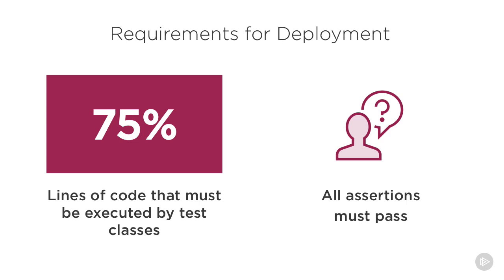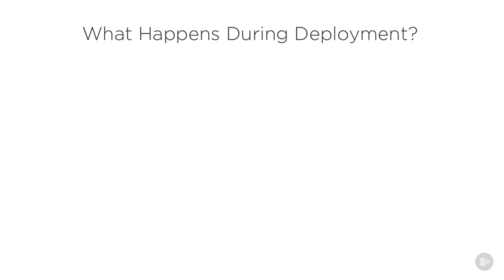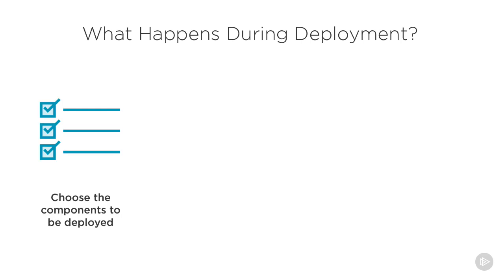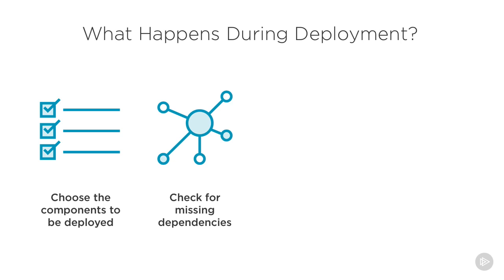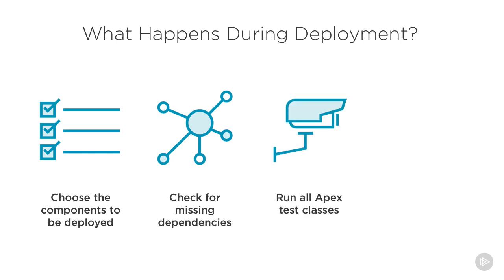The only exception to this rule is if you're deploying components other than code. Non-code components such as workflow rules can always be deployed regardless of your test class coverage. Once you think you've met all the requirements to start a deployment, what actually happens? First you choose the components that need to be deployed. Then Salesforce checks for any missing components — for example, you could be deploying a new custom field on a new custom object but forget to add that custom object to your deployment, and you'll get an error telling you that you're missing a dependency. Then Salesforce will run all test classes in your org — all of them, not just the ones you're deploying. Finally, Salesforce will return your results, pass or fail. If you met all the necessary requirements, your code will be deployed.